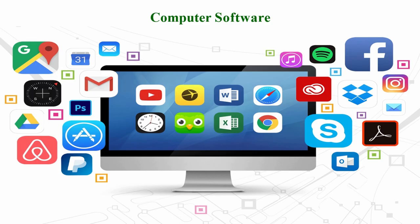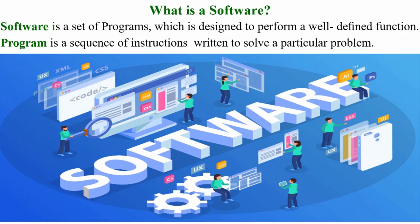Today we are going to discuss computer software. Software is a program that runs the hardware. When you turn on your computer, the first thing you see is software. When you play music, movies, or browse the internet, you are using software. Software is a set of programs designed to perform a well-defined function, while a program is a sequence of instructions written to solve a particular problem.